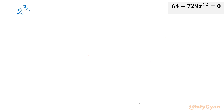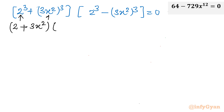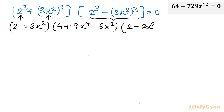Writing (2³ + (3x²)³) and (2³ − (3x²)³) equal to 0, and applying the identities — where a = 2 and b = 3x² — the first factor expands to (2 + 3x²)(4 + 9x⁴ − 6x²), and the second factor expands to (2 − 3x²)(4 + 9x⁴ + 6x²) equal to 0.